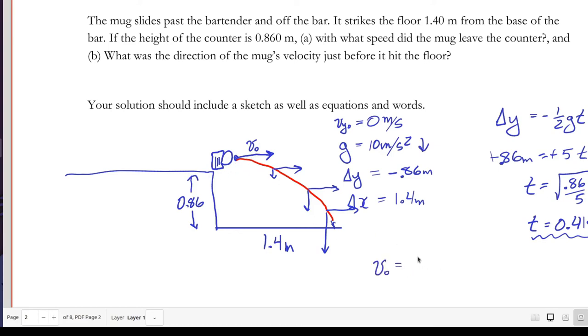So v0 is how far it travels, 1.4 meters, divided by 0.41 seconds, and that works out to 3.41 meters per second.